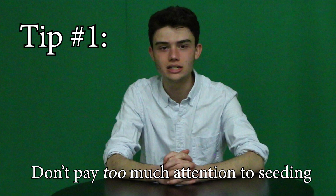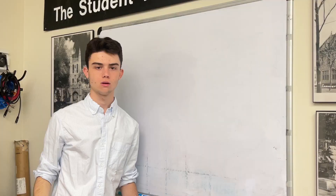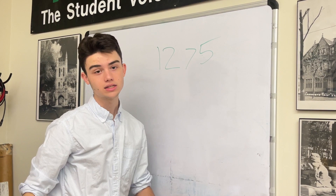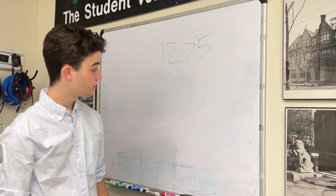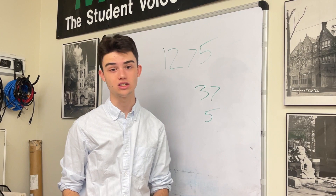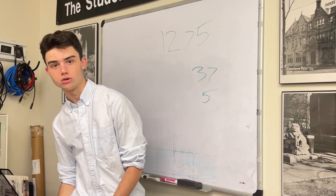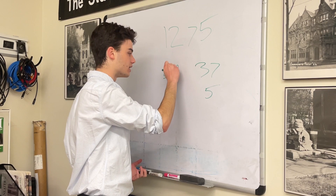Tip number one: try not to pay that much attention to seeding when making your March Madness picks. One thing I want to avoid is telling you to pick teams solely based on seeding. For example, it is very common advice to pick a 12 seed to beat a 5 seed, and it makes sense because of the history of the matchup. Since the modern day tournament format was adopted in 1985, there have been 37 March Madnesses, and only five of them have seen all four of the five seeds advance past the first round.